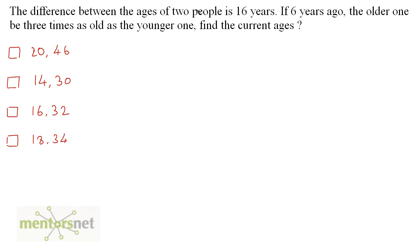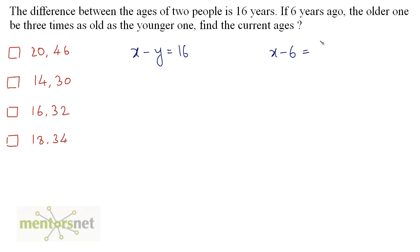Let the ages of these two people be x and y. We have been given the difference of ages, so x minus y is equal to 16. If 6 years ago the older one be 3 times as old as the younger one — the older one is x here because x minus y gives a positive value — so 6 years ago: x minus 6 is equal to 3 times y minus 6.